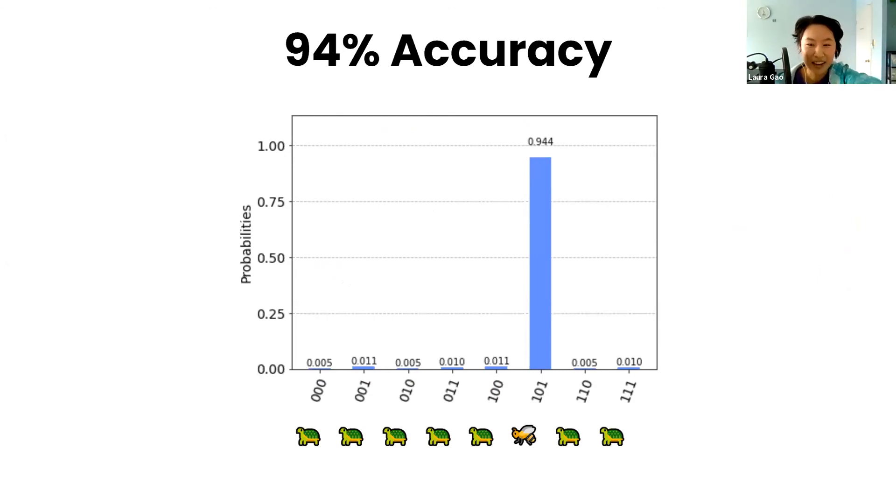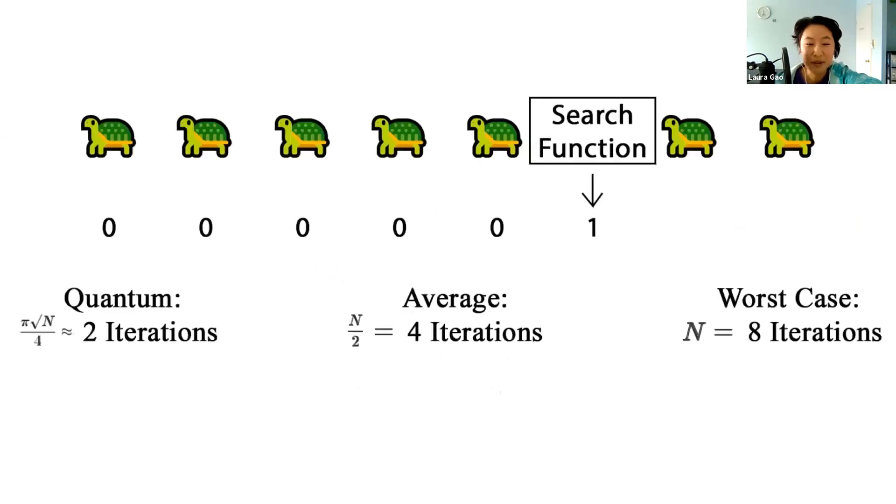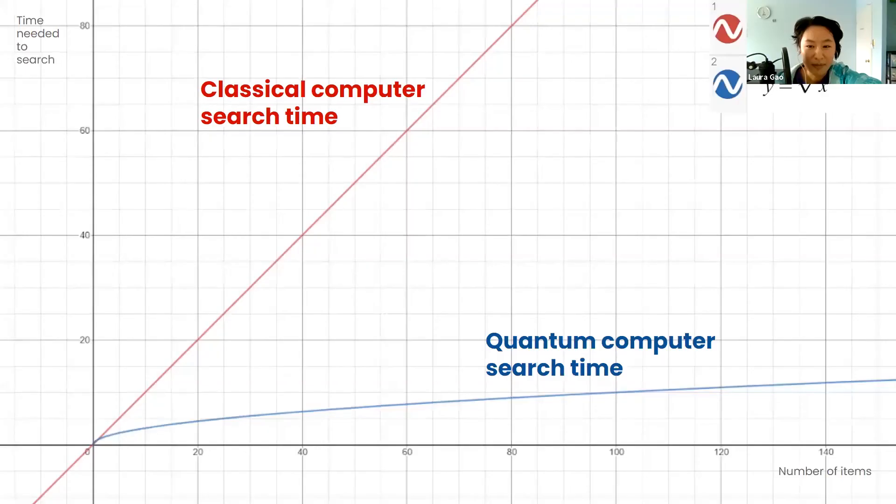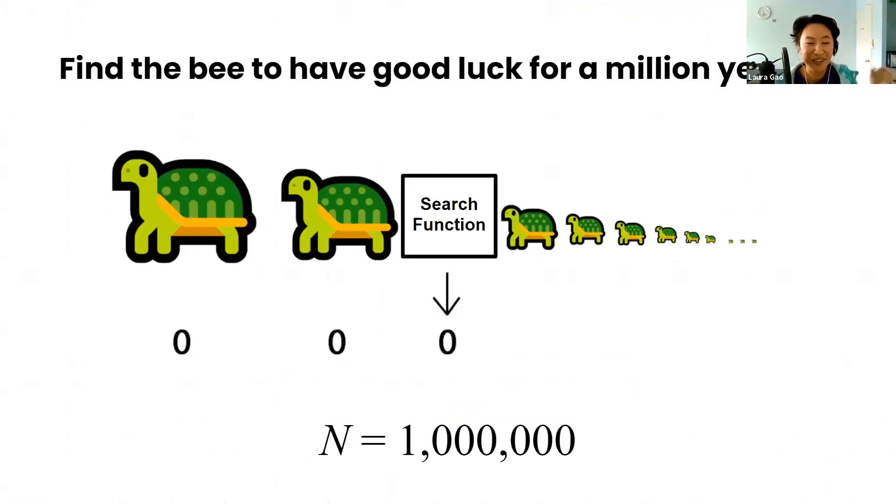However, you may ask, why do we care even if we had to repeat our search function eight times? That's not a lot, right? But what if we had to search through more than eight objects? Because quantum computers use the square root of the amount of time to search through the items as a classical computer, the advantage of quantum computers grows exponentially. If you had a big copypasta and had to search through a million items to get good luck, you'll be able to get your good luck exponentially faster than your friend who uses a classical computer.